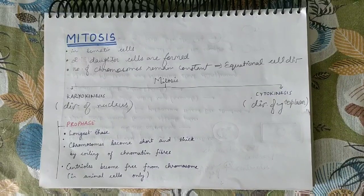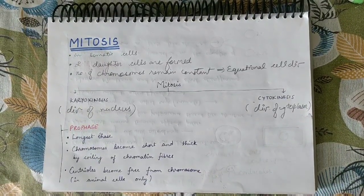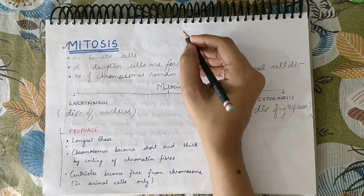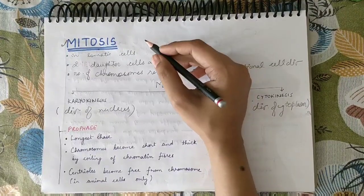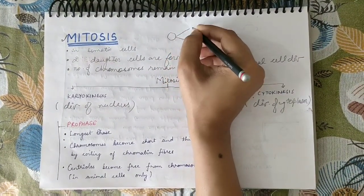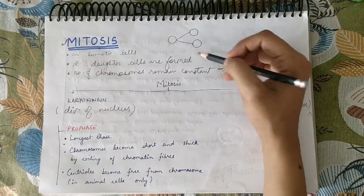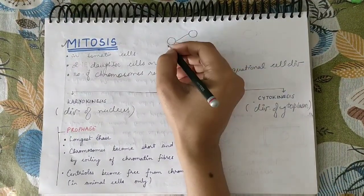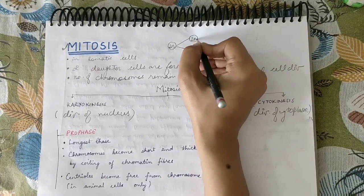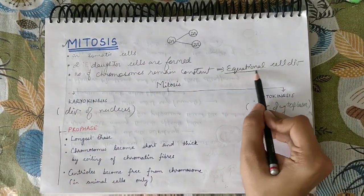We have completed the introduction of cell division and studied that cell division is of two types: mitosis and meiosis. Mitosis takes place in somatic cells — normal body cells — and from one parent cell, two daughter cells are formed. Unlike meiosis where four daughter cells are produced, in mitosis the number of chromosomes remains constant: if the parent cell has 2n chromosomes, daughter cells also have 2n. This is why mitosis is known as equational cell division.